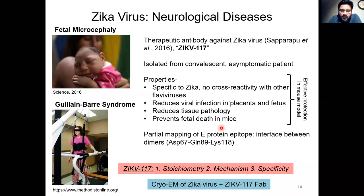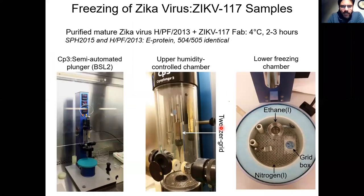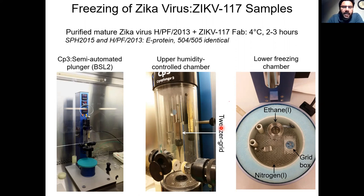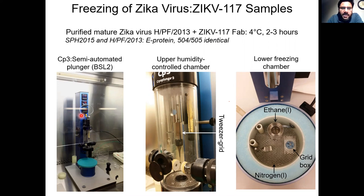To address these three questions, we decided to perform cryo-electron microscopy on purified infectious Zika virus particles complexed with FABs from ZIKV-117. I'll give you a brief introduction to how the experiment was done. In the first step of any cryo-EM experiment, you prepare a sample on a cryo-EM grid. We took purified mature Zika virus particles, mixed in FAB fragments from ZIKV-117, and flash-froze the mixture on cryo-EM grids using a CP3 semi-automated plunger kept in a BSL-2 containment facility.